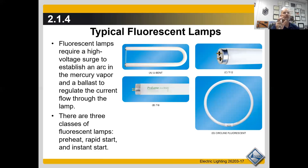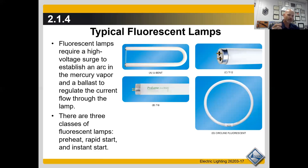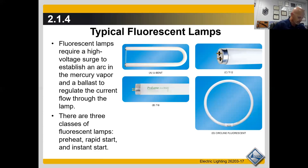When you see a lamp that's brightening and dimming repeatedly, there's a good chance the ballast is starting to go out. If you turn a light off and back on and it kicks on the second try, that could be the starter inside the fixture. If the fixture doesn't have a separate starter, then there's a built-in starter in the ballast, and the ballast is about to fail as well.